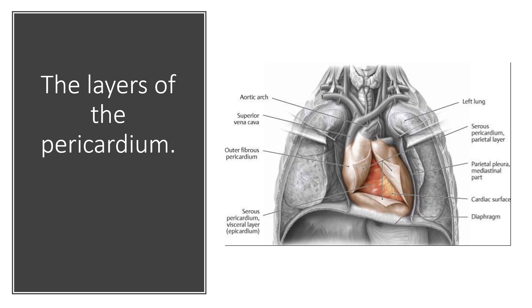Outside of the heart is lined with a thin tissue called the pericardium. Under the pericardium, you have the fibrous pericardium and the serous pericardium. Beneath the serous pericardium is the epicardium. Under the epicardium is a thick muscular layer called the myocardium. Then finally, we reach the thin inner layer of the heart, which is the endocardium.